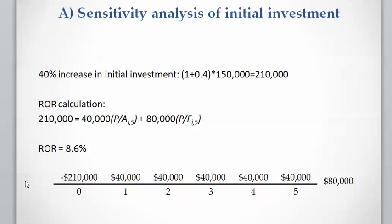The fourth case is when the initial investment is increased by 40%, which is 1 plus 40% multiplied by $150,000, coming to $210,000. The rate of return is calculated as 8.6% when the initial investment is increased by 40%.